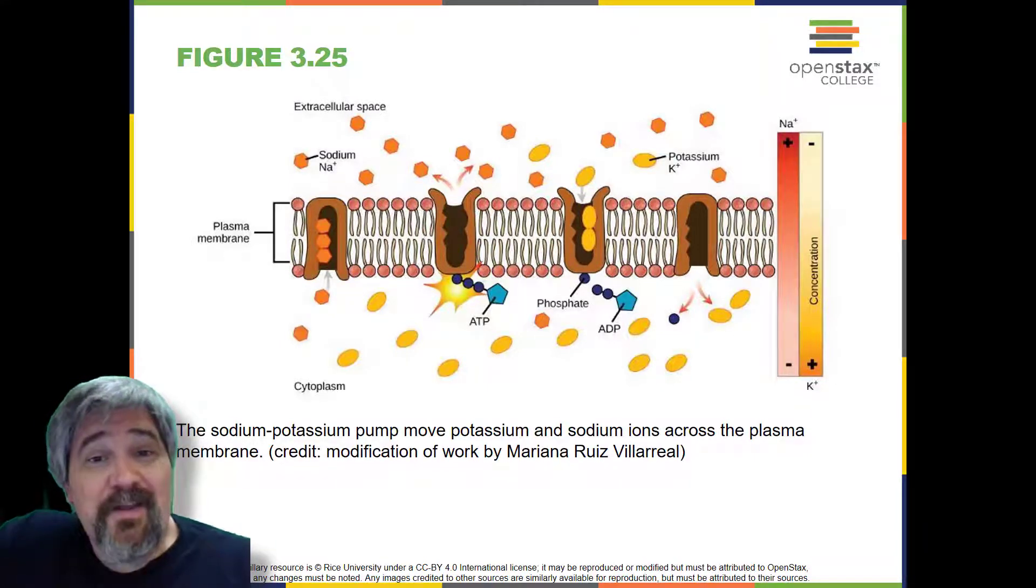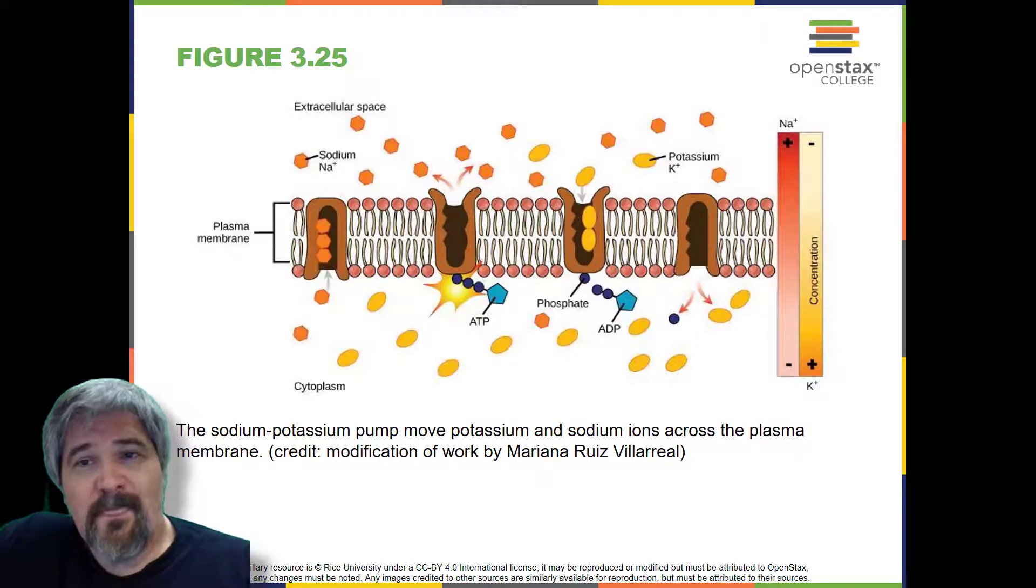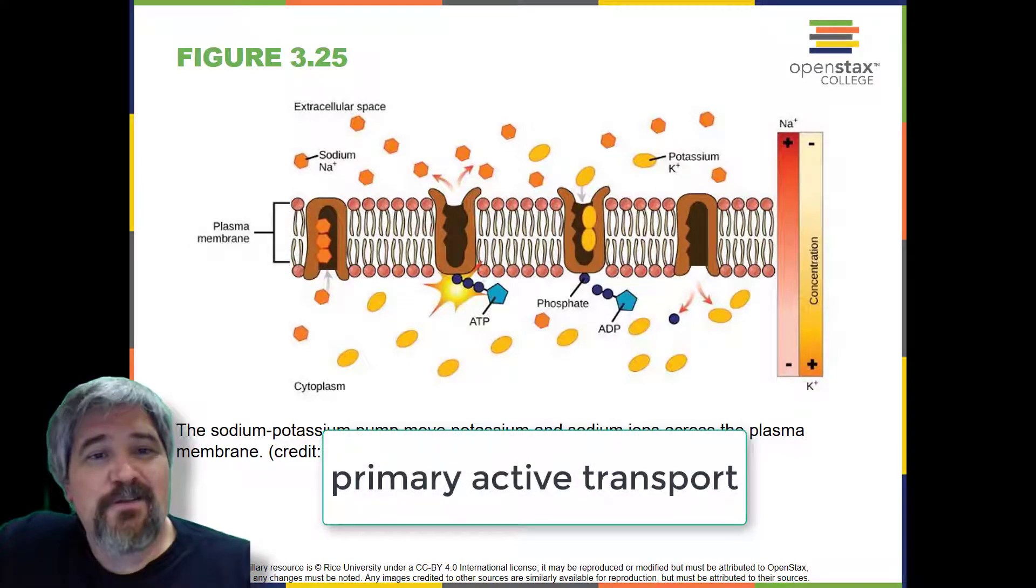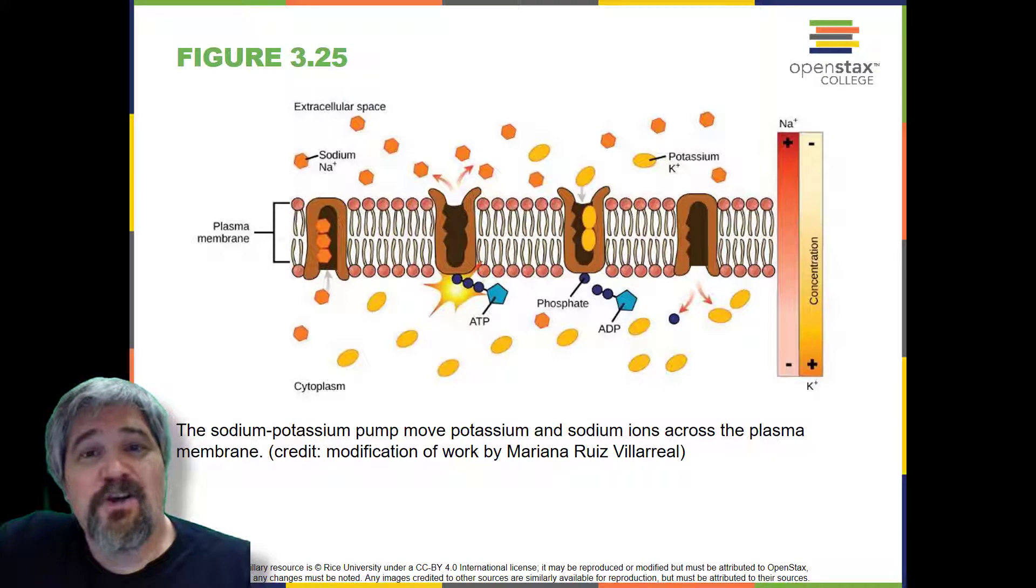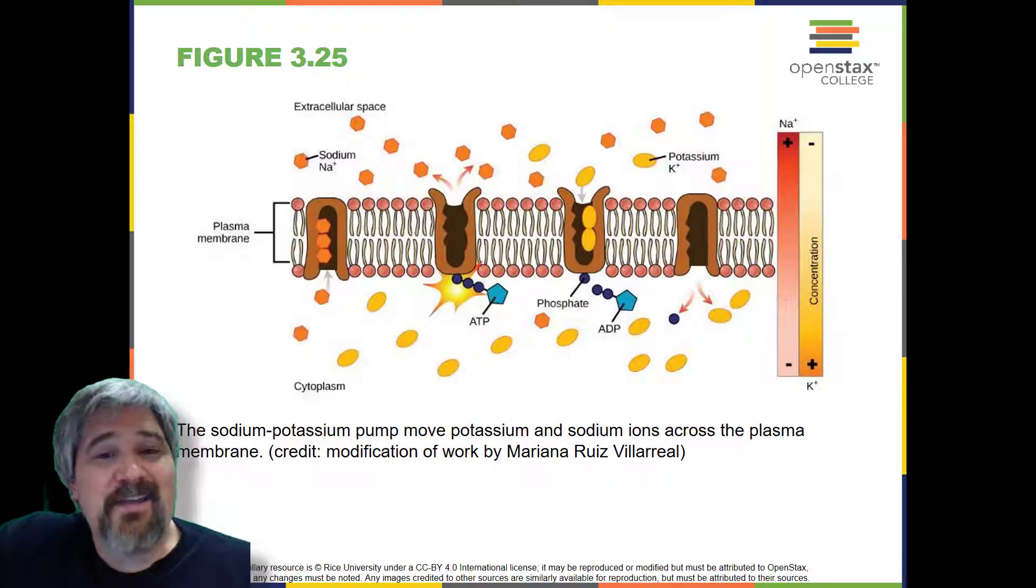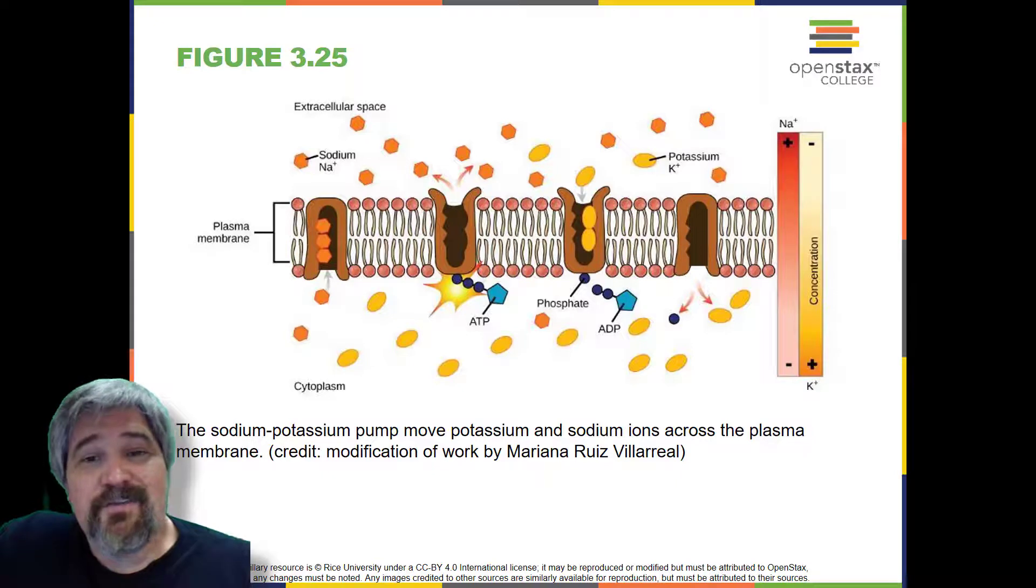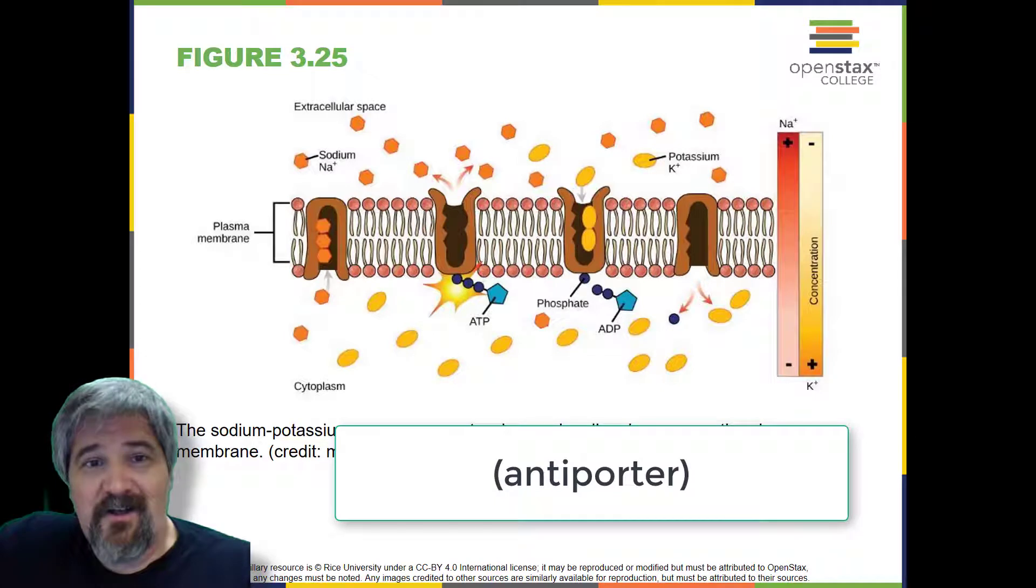Two mechanisms exist for the transport of small molecular weight materials and macromolecules. Primary active transport moves ions across a membrane and creates a difference in charge across that membrane. The primary active transport system uses ATP to move a substance, such as an ion, into the cell and often at the same time a second substance is moved out of the cell.